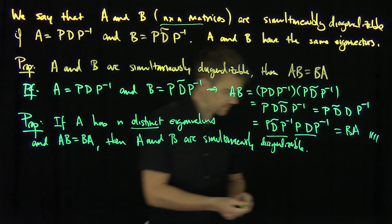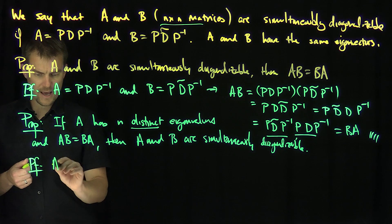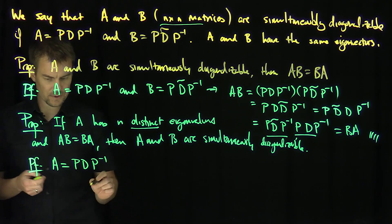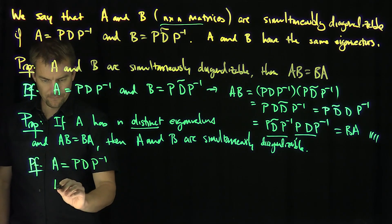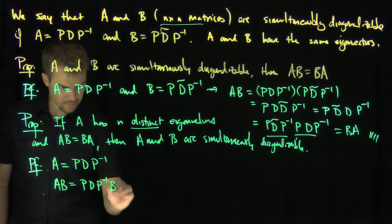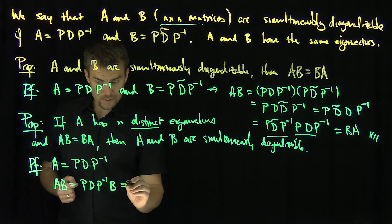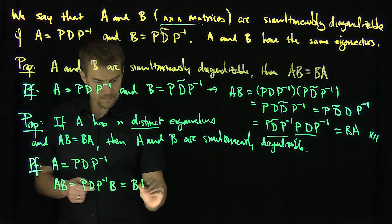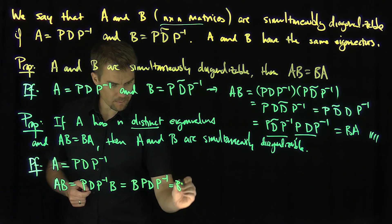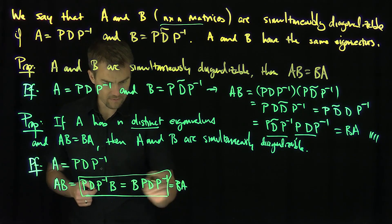Now we prove this. Since A has n distinct eigenvalues, I can diagonalize it as PDP inverse. Looking at AB, this equals PDP inverse times B. And since AB equals BA, this is also equal to B times PDP inverse. These two expressions must be equal to each other — that's the key of this argument.